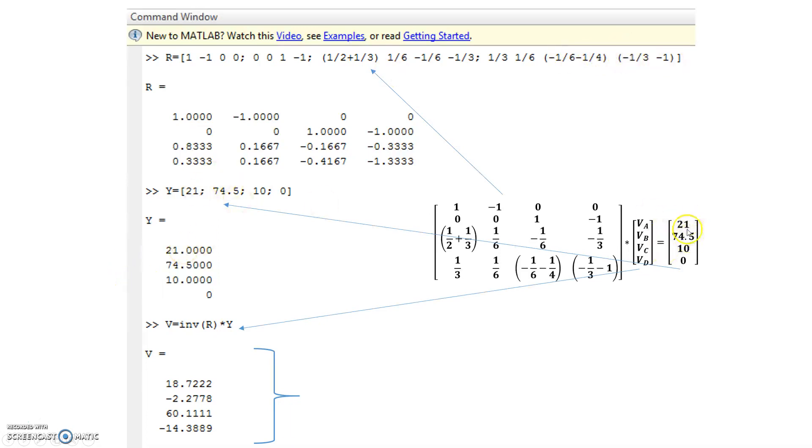Y, which is this side right here, 21, semicolon, 74 and a half, semicolon, 10, semicolon, 0. The semicolons are there to separate out the rows. And I use inverse R times Y. Another way to solve this is also to say V equals R backslash Y in MATLAB. And if we do this,